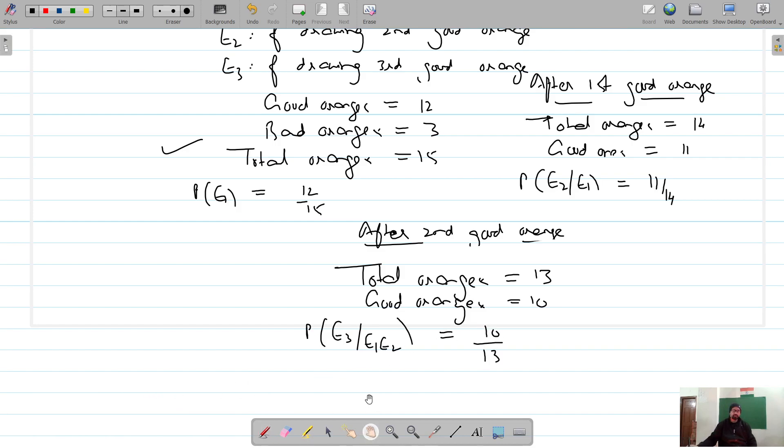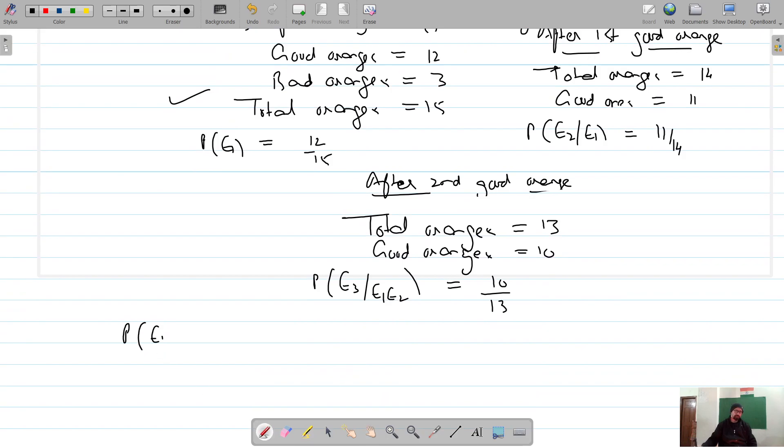But we have to find out the combined probability of first good orange, second good orange, and third good orange, which can also be written as E1 intersection E2 intersection E3. That should be equal to probability of E1 times probability of E2 given E1 times probability of E3 given E1 and E2. So probability of E1 is 12 by 15, probability of E2 is 11 by 14, and E3 is 10 by 13.